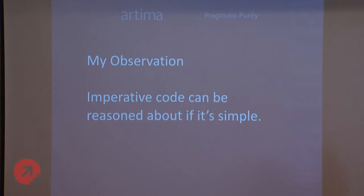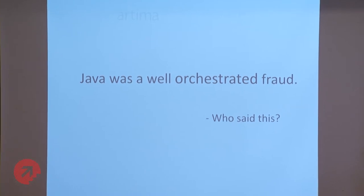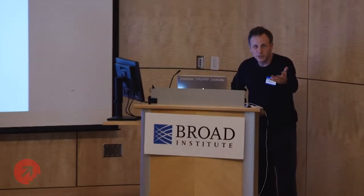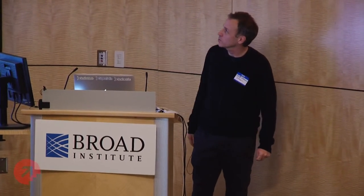I'd like to show two examples where I think imperative code is very difficult to reason about. The first has to do with this statement which I heard someone say at a conference: 'Java is a well-orchestrated fraud.' Does anybody have any idea who might have said that? James Gosling said it. So this is the father of Java, and he said Java was a well-orchestrated fraud.